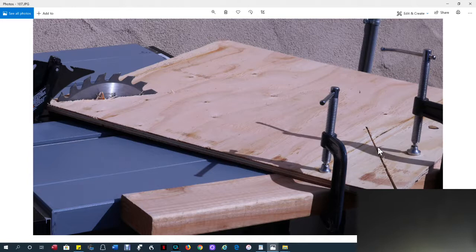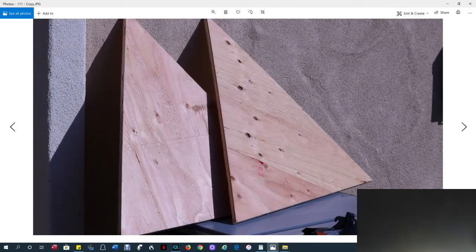Flip it over. Repeat the process for this side. Do the other piece the same way. Now you've got two equilateral triangles that look like this.